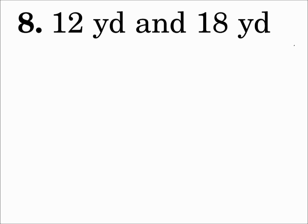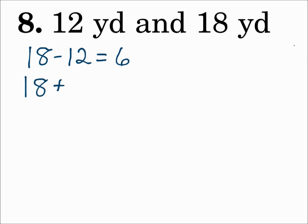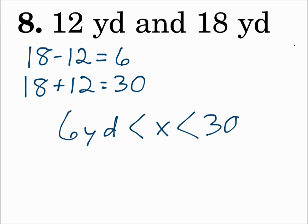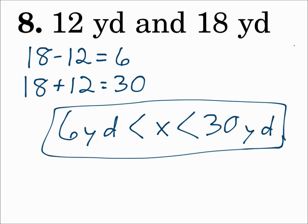Number 8: if two sides of a triangle are 12 yards and 18 yards, what's the range of the length of the third side? Subtract to get the low end: 18 minus 12 is 6. Add to get the high end: 18 plus 12 is 30. So the third side has to be between 6 and 30, written as: 6 yards is less than x is less than 30 yards. Subtract the given sides to get the low end, add the given sides to get the high end, and the third side is between those two numbers.